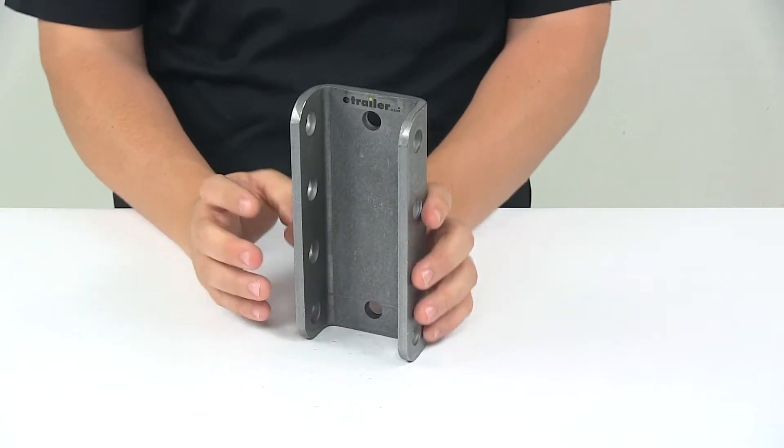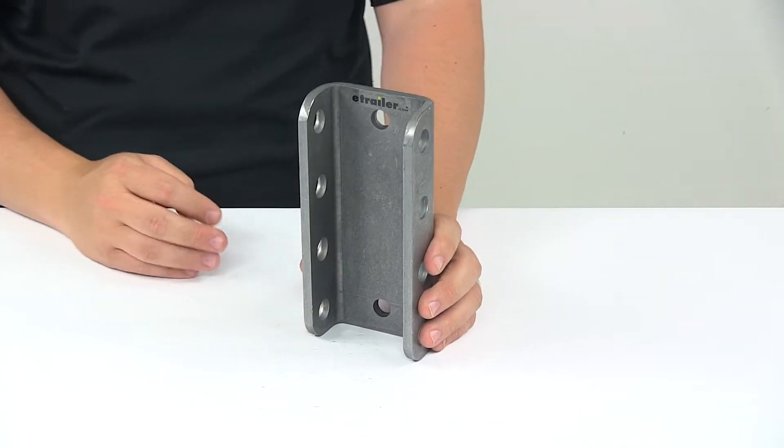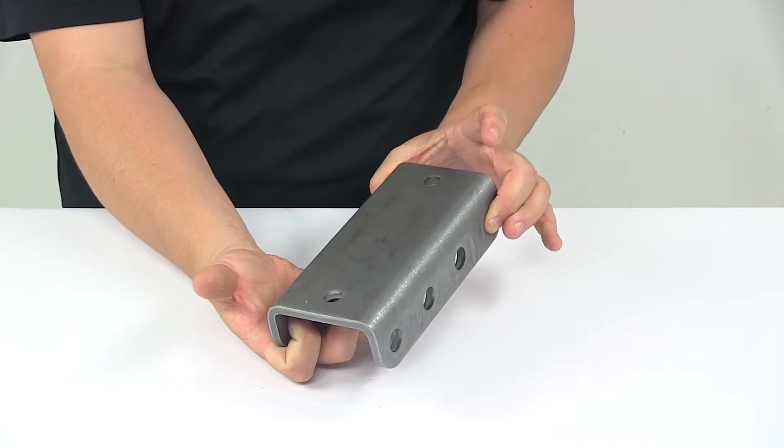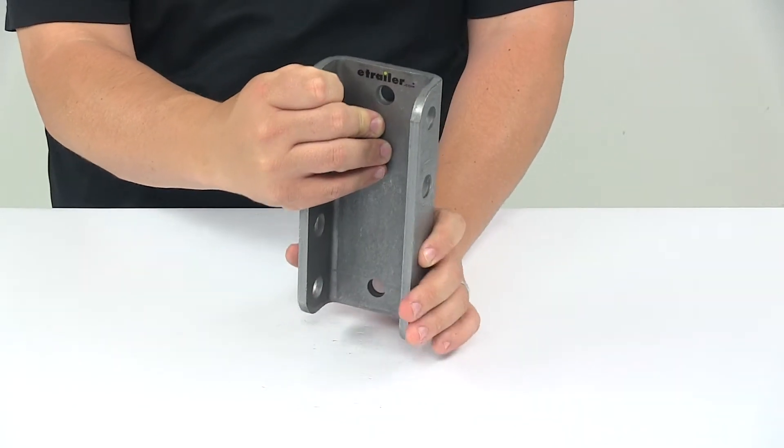Now the channel is built of strong five sixteenth inch thick form steel. It's a carbon steel construction with plain finishing. It is designed to be welded to your trailer tongue.